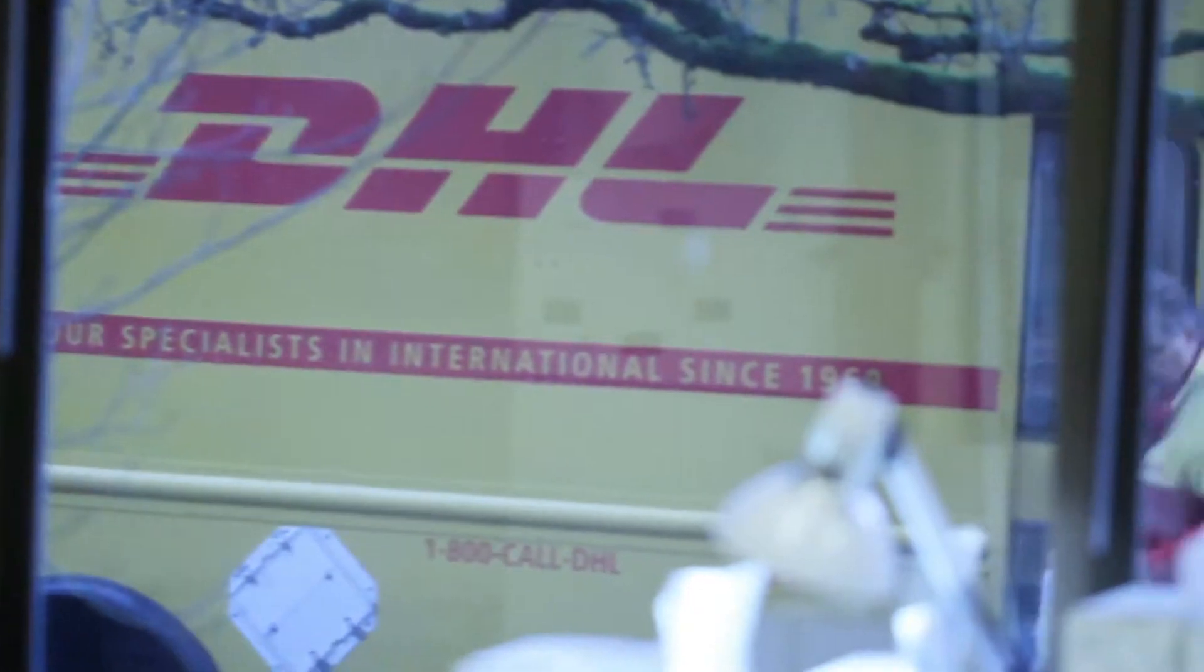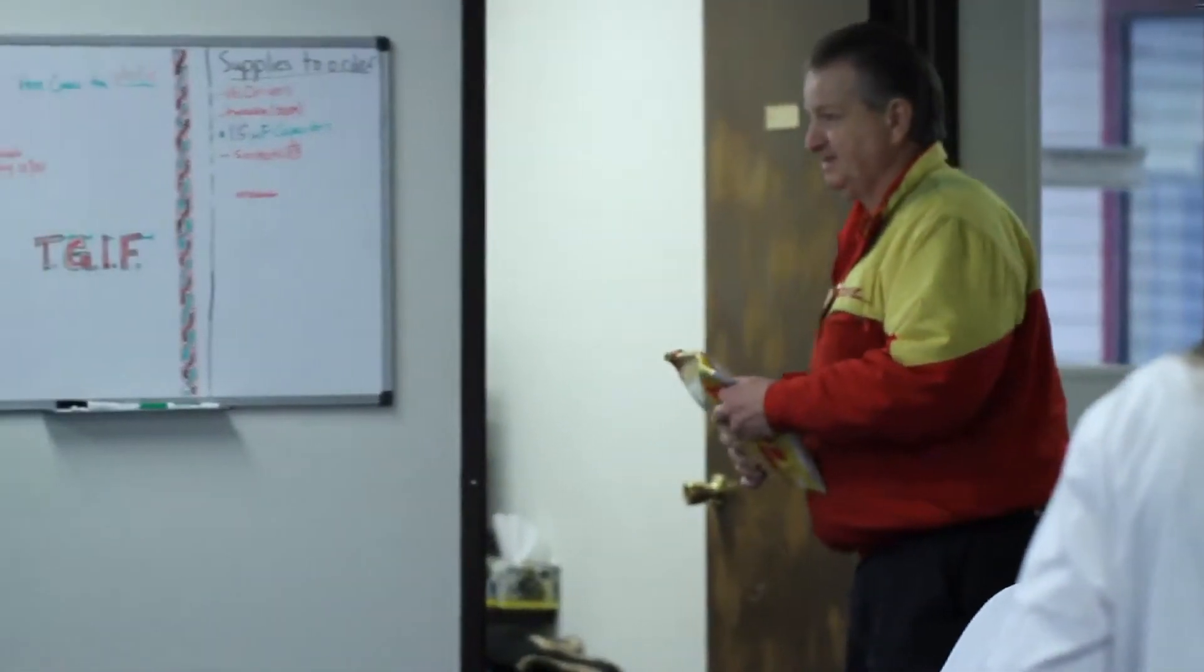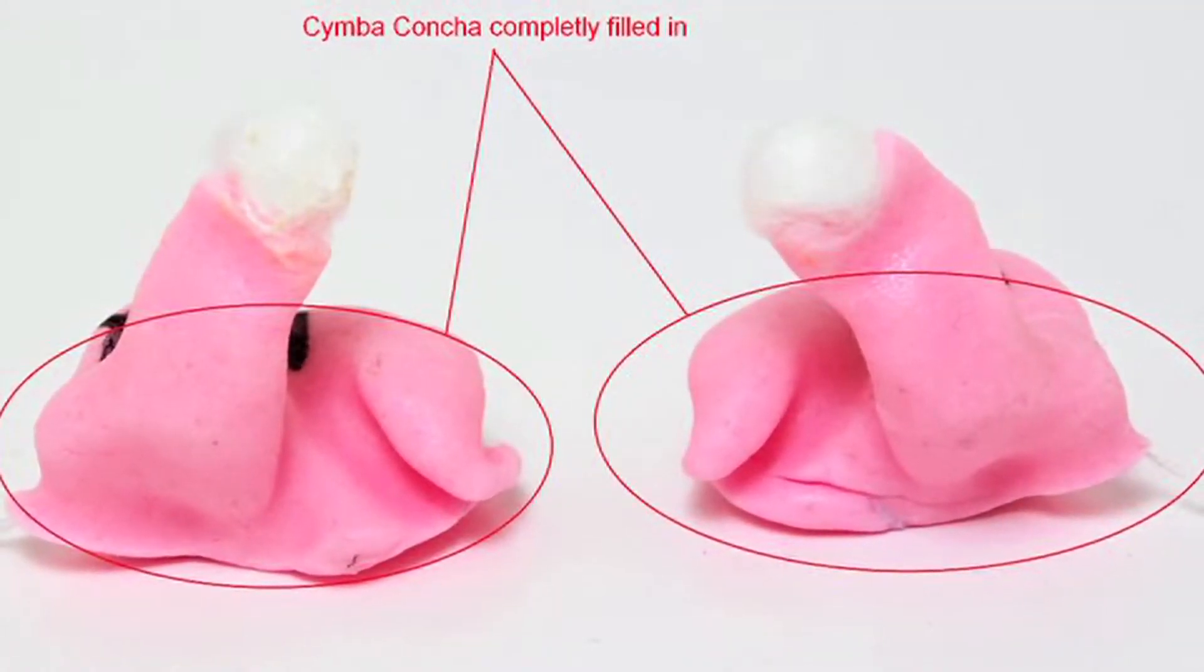It all starts when we get your ear impressions, generally through the mail. We prefer to work with impressions made of silicone material because they're able to keep their shape much longer than liquid and powder type impressions.